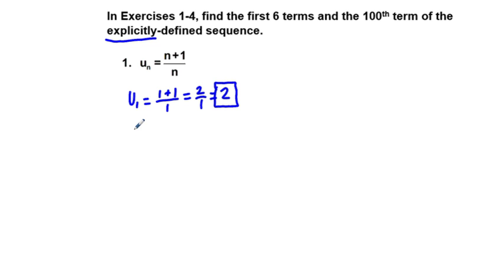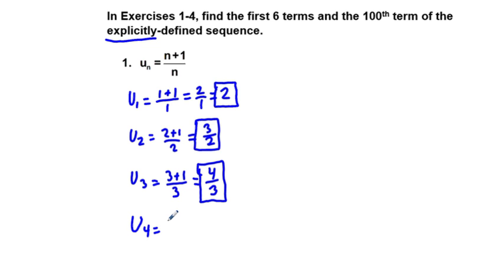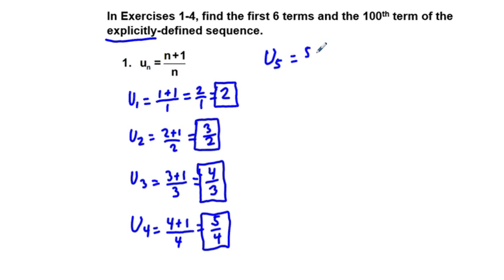u sub 2 is going to be — we just plug in the 2 — so we have 2 plus 1 over 2, which equals 3 halves. u sub 3 is equal to 3 plus 1 over 3, which equals 4 thirds. u sub 4 is equal to 4 plus 1 over 4, which equals 5 fourths. And u sub 5 is equal to 5 plus 1 over 5, which equals 6 fifths.